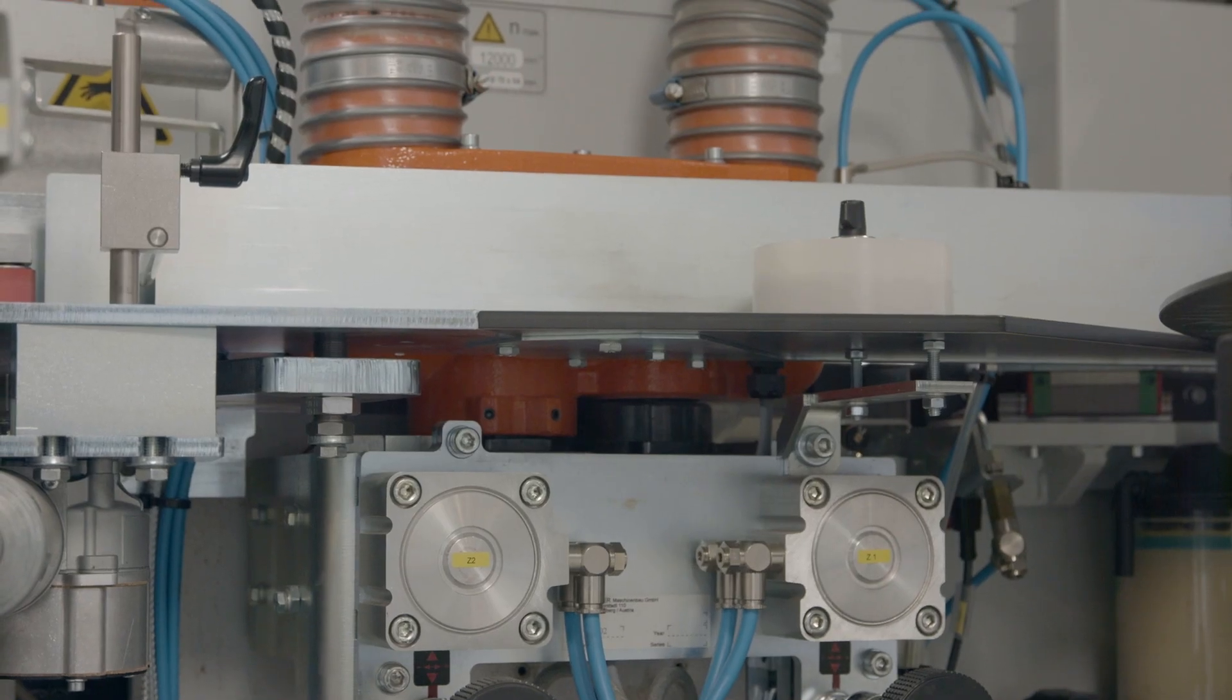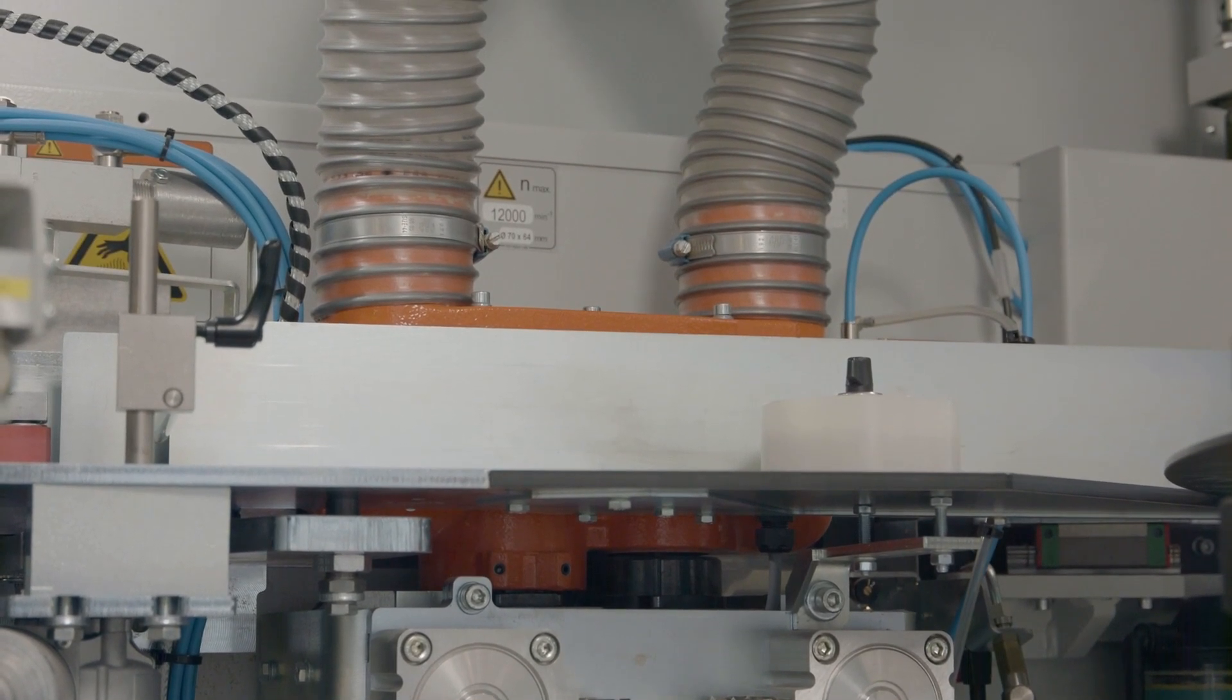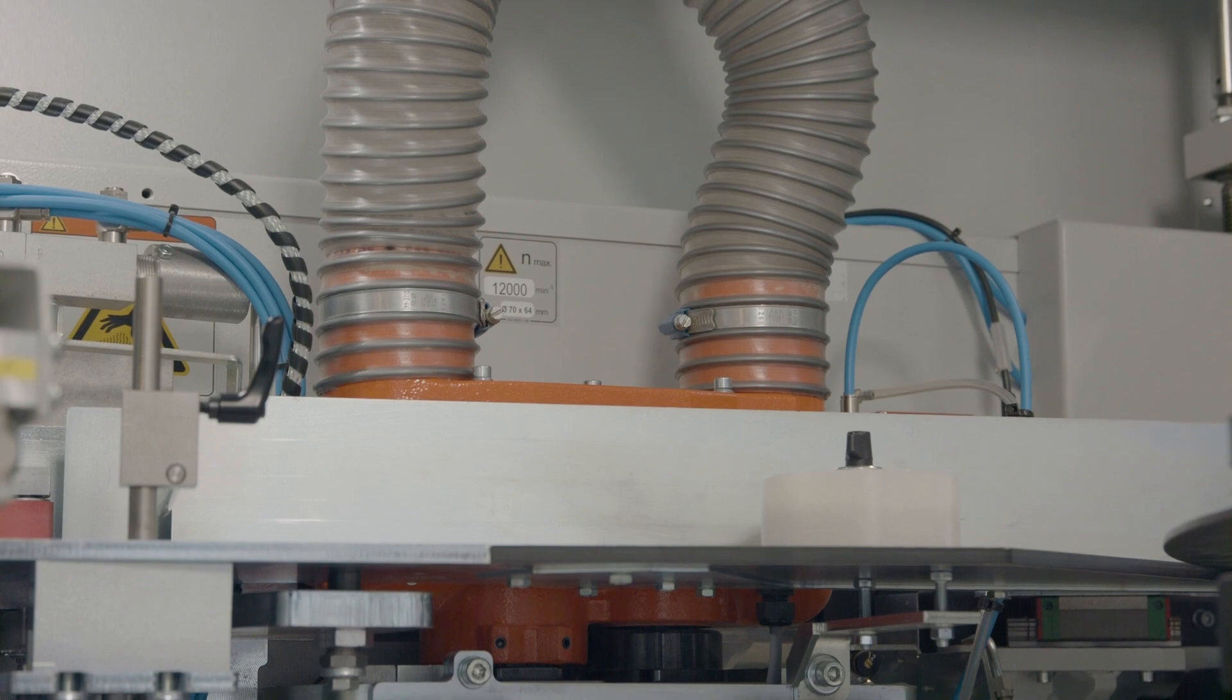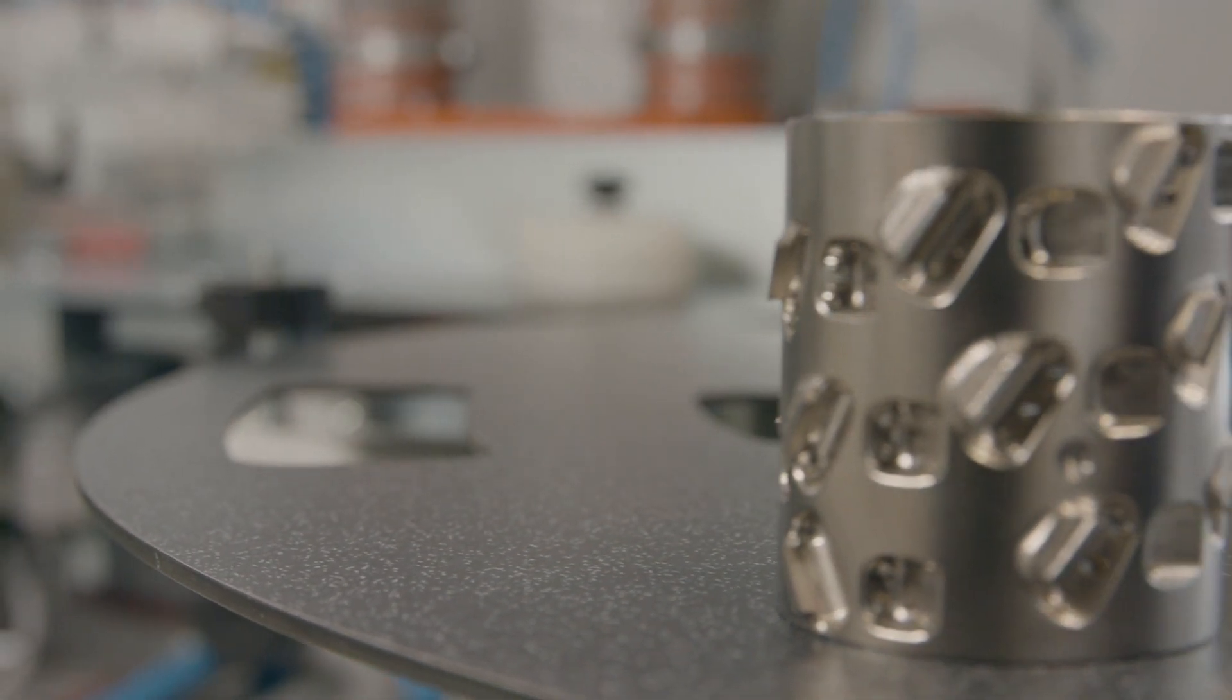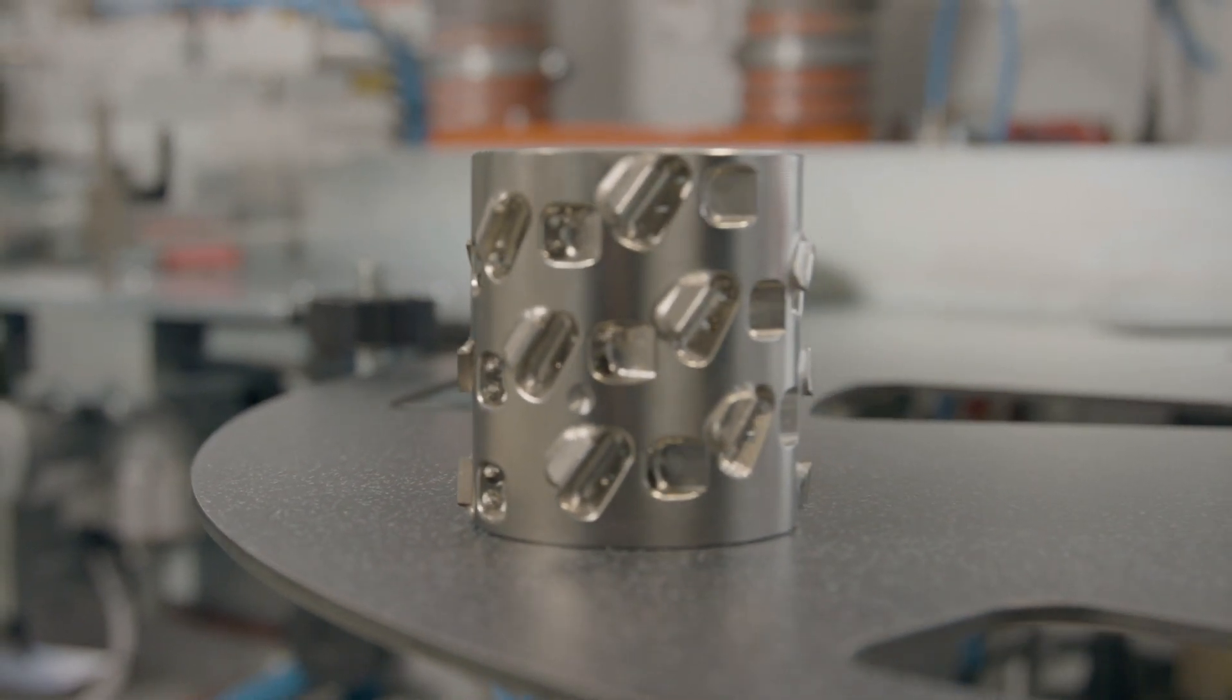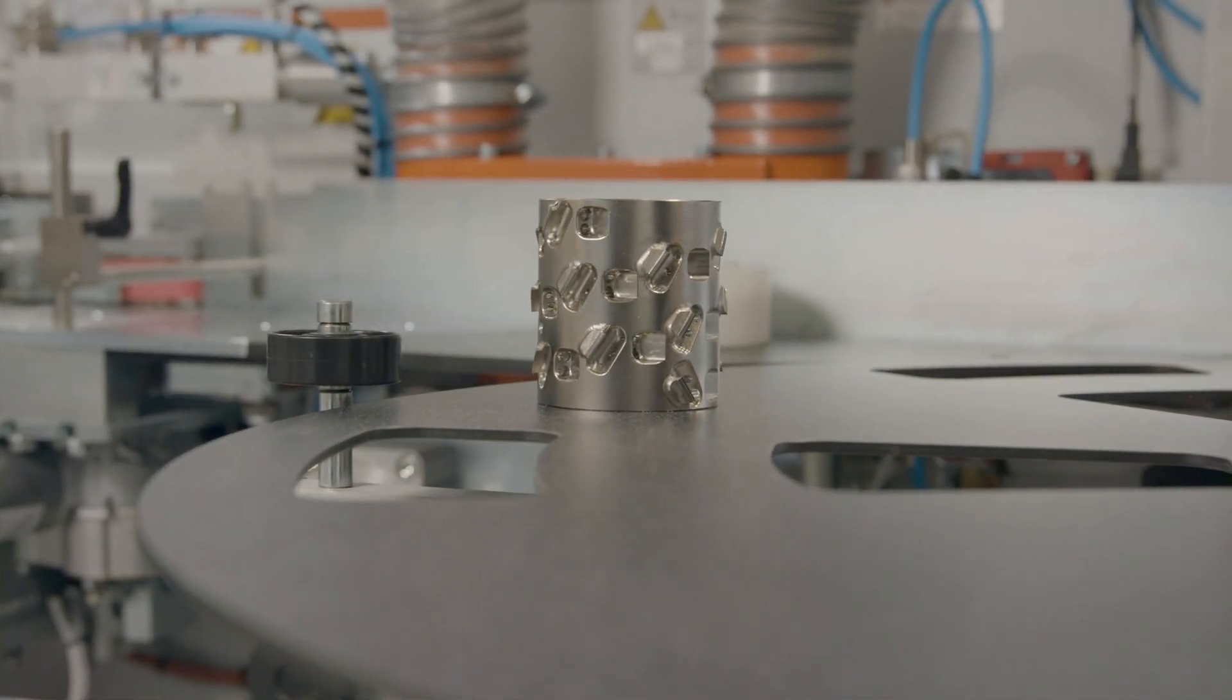Up to 99% of the chips produced are collected directly by the extraction system. This effectively prevents double chip removal and ensures an enormous tool life of the milling cutters. Furthermore, these cutters are also extremely quiet and can be resharpened up to four times.